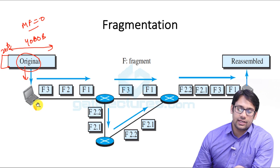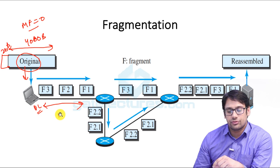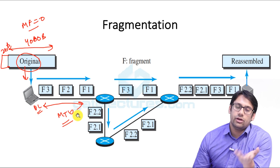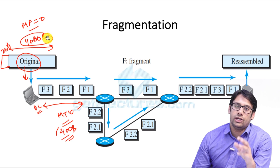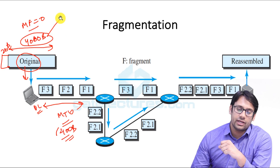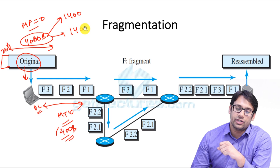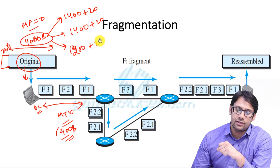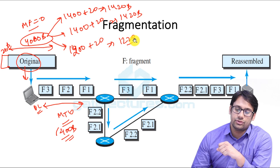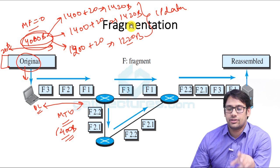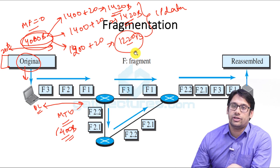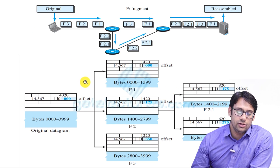We give this packet to the data link layer, which checks the MTU (Maximum Transmittable Unit) of the network. For example, if the MTU is 1400 bytes, then the 4000 bytes must be broken into packets of 1400 bytes each. The first packet is 1400 bytes, the second is 1400 bytes, and the third is 1200 bytes. So the original 4000-byte packet is divided into three fragments.